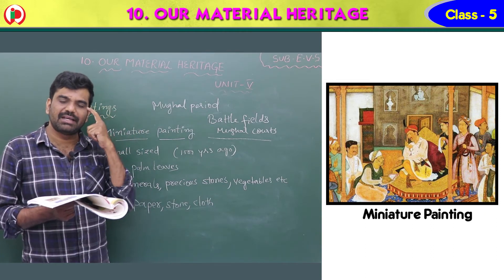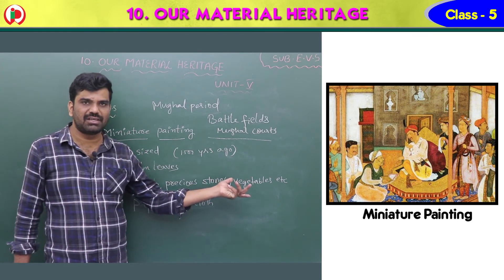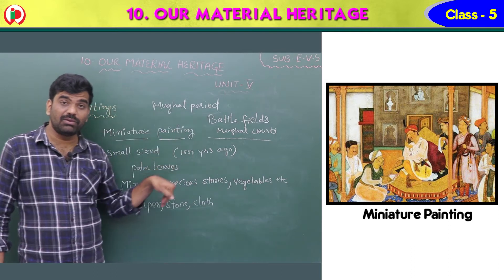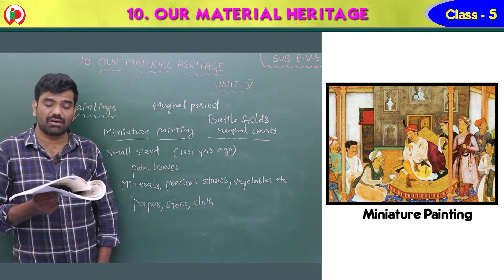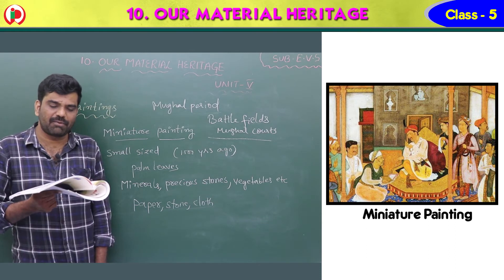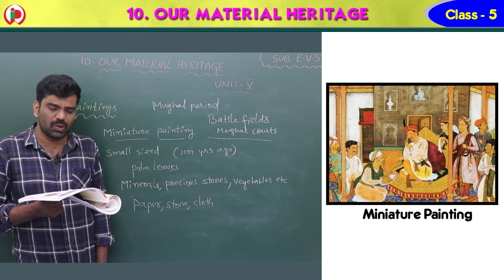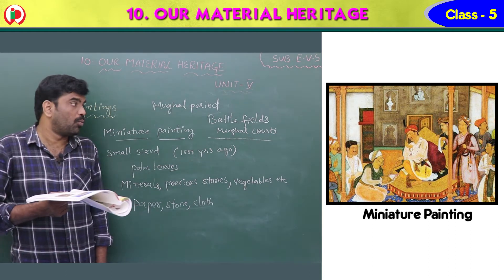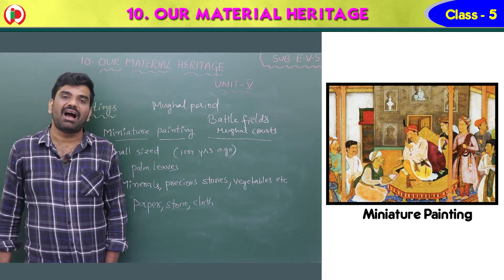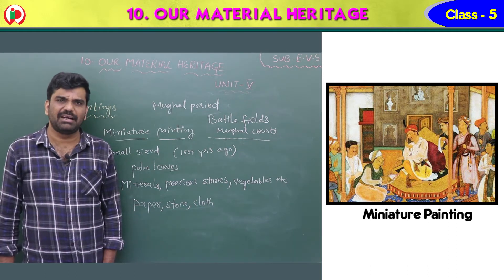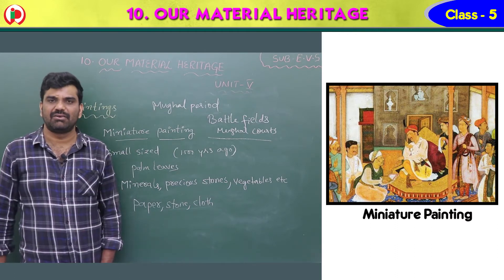Colors for these paintings were taken from minerals, precious stones, and vegetables. Today they are made on paper, stone, and cloth. These were very popular in the Mughal period — they show themes from the Mughal courts and battlefields. A large number of artists were involved in a single painting.